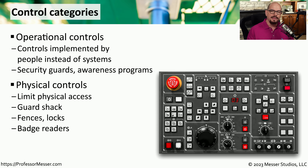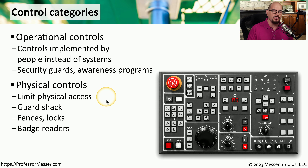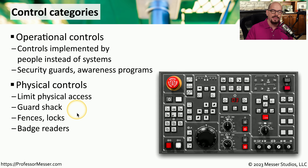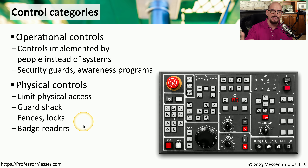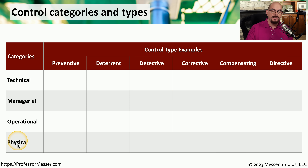The last category we have are physical controls. As the name implies, these are controls that would limit someone's physical access to a building, a room, or a device. This might be something like a guard shack to check everyone coming into a particular area. Maybe there are fences and locks to keep people out, or maybe you use badge readers to limit access into certain areas within your building.